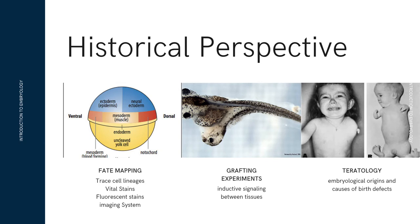Grafting experiments also provided the first insights into signaling between tissues. Examples of such experiments included grafting the primitive node from its normal position on the body axis to another position, and later showing that the structure could induce a second body axis. This was actually a doctorate study conducted by Hilde Mangold together with her dissertation advisor, Hans Spemann.